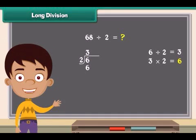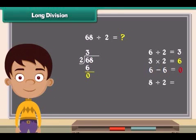Now we do subtraction. That is 6 minus 6 is equal to 0. We carry down the second number. Now we will divide 8 by 2. 8 divided by 2 is 4. So we put that 4 right above the 8.